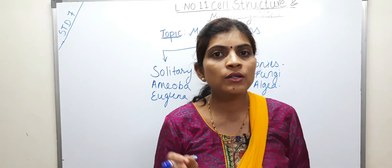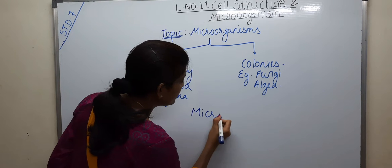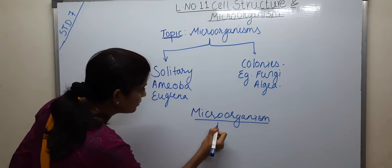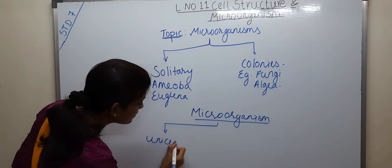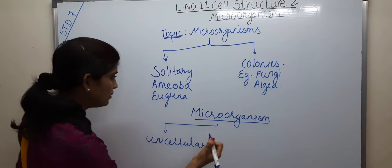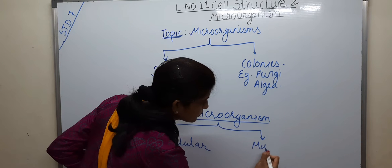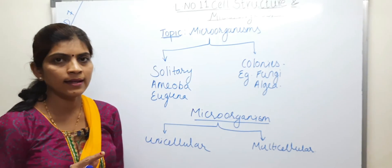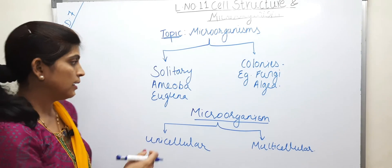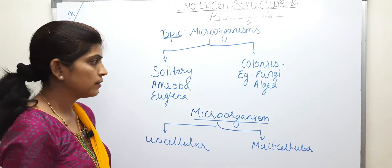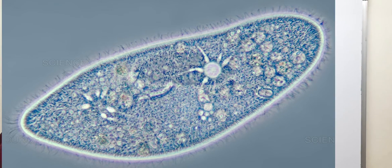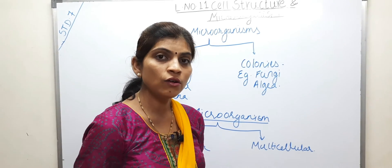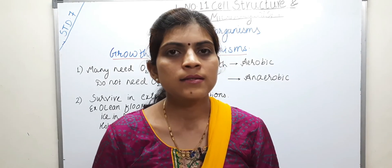Depending on the number of cells, microorganisms can be classified as unicellular or multicellular. Unicellular means consisting of just a single cell, and multicellular means consisting of many cells. Examples of unicellular microorganisms are amoeba, euglena, and paramecium. Examples of multicellular microorganisms are algae and fungi.